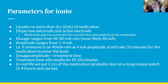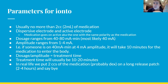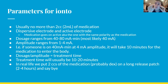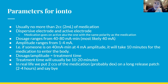You pull the medication out and put it on the active electrode. The dispersive electrode grounds the electricity into the patient. The active electrode is what actually drives the medication into the skin. Remember, the medication goes on the active electrode — the one with the same polarity as the medication. If it's negative, it goes on the cathode. If it's positive, it goes on the anode.